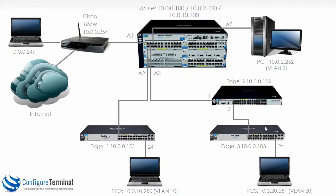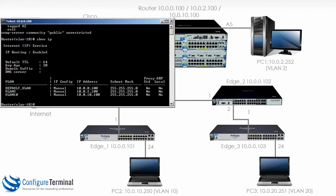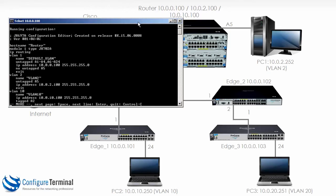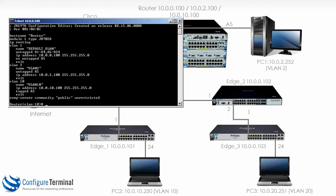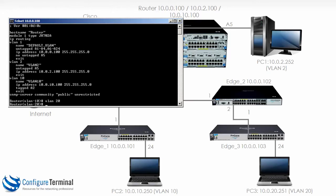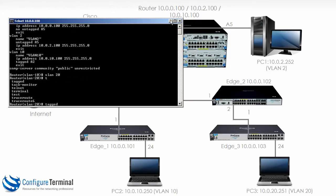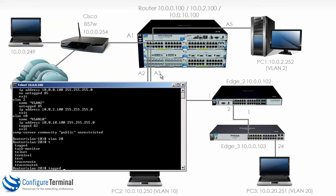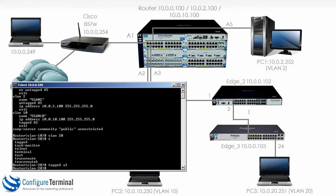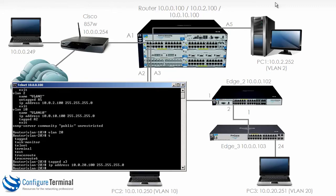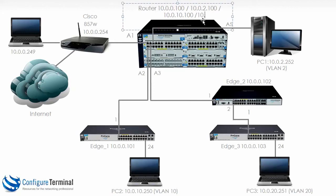We have successfully configured edge 2 and edge 3. Let's configure the router. At the moment we only have VLAN 1, VLAN 2, and VLAN 10, so let's create VLAN 20. We are going to tag VLAN 20 on port A3 and give it an IP address of 10.0.20.100 with a mask of /24. This device now has an additional IP address of 10.0.20.100.